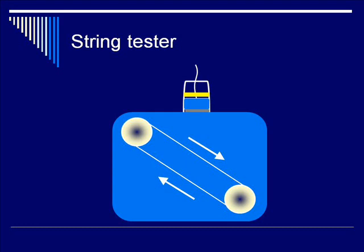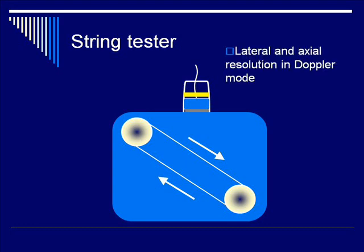Another nice thing is that the target is a thin string. Because of this, it's also useful to evaluate the lateral and axial resolution of the probe in Doppler mode, for the same reason that small targets are useful for determining resolution in B mode. You can measure the lateral and axial resolution the exact same way that you do in B mode.